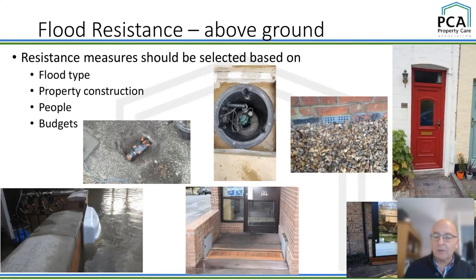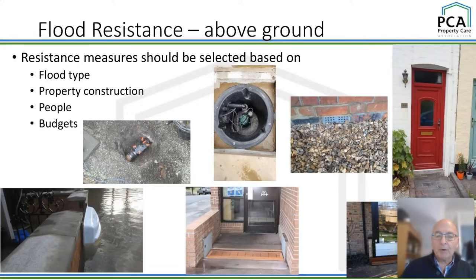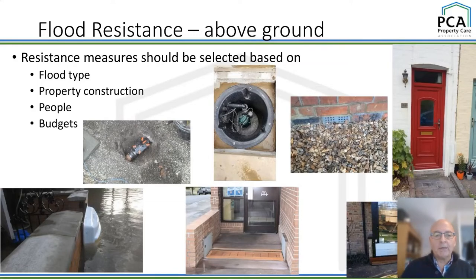Here are a few flood resilience measures shown on screen. Protection doesn't have to be on the house itself — we can protect at the boundary and keep the water away from the house. We have a non-return valve before the chamber, an internal sump pump, an air brick replaced with a smart air brick, a flood door, a slot-in barrier, and over here at this McDonald's entrance, a passive barrier where water comes in and the barrier floats up by itself.